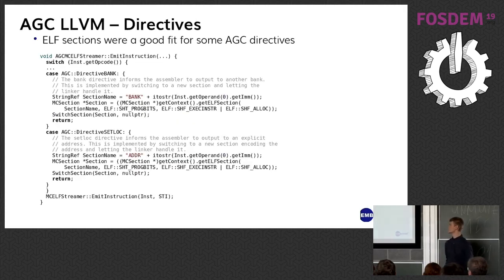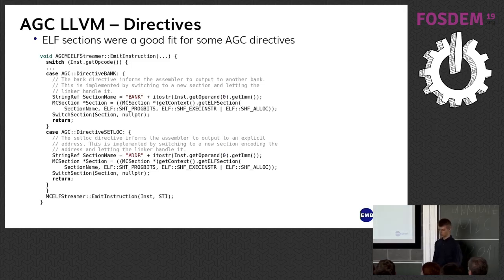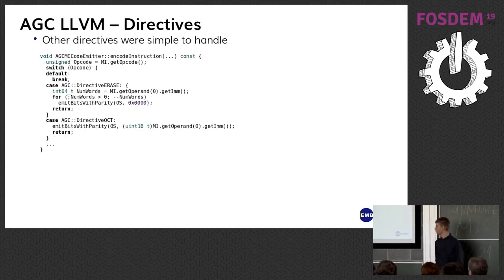Some directives didn't trip up the asm parser, so I implemented them instead by custom emitting pseudo instructions. The bank and setlock directives are handled by switching ELF sections — bank is used to switch which memory bank the assembler is currently outputting to, and setlock is used to switch assembly output to an explicit address. Some other directives were erase and oct, which are used to emit bits into the current output location, so they only needed to be implemented in the MC code emitter.